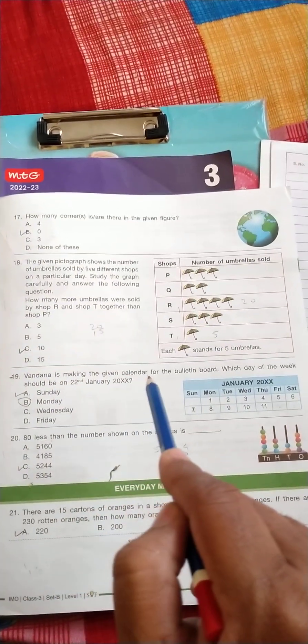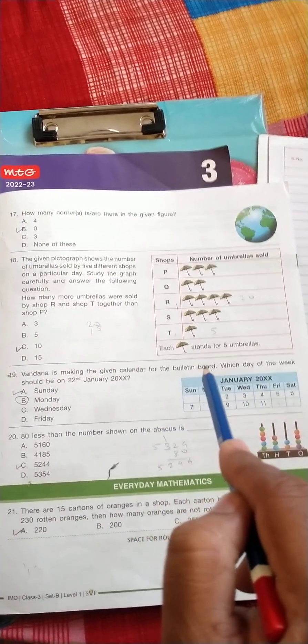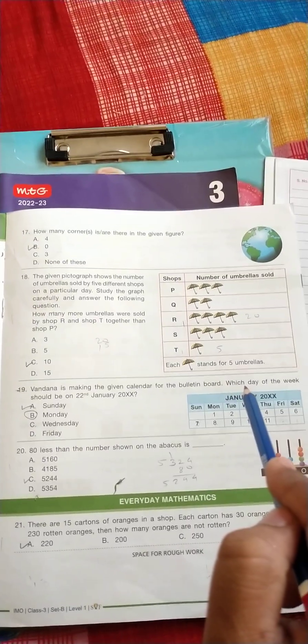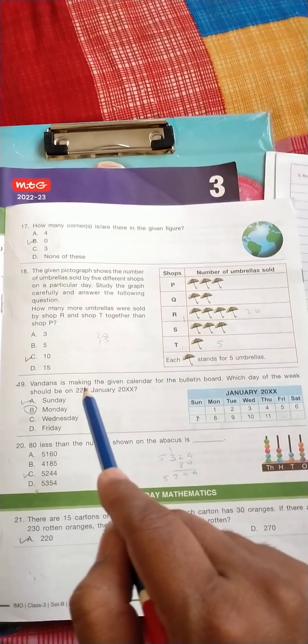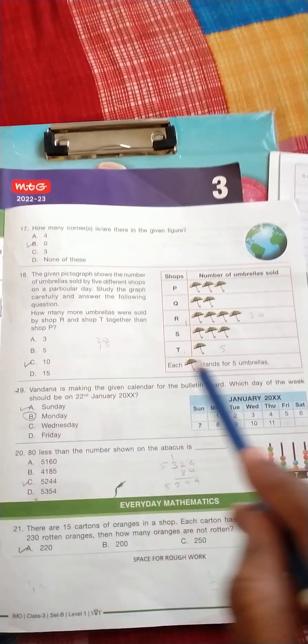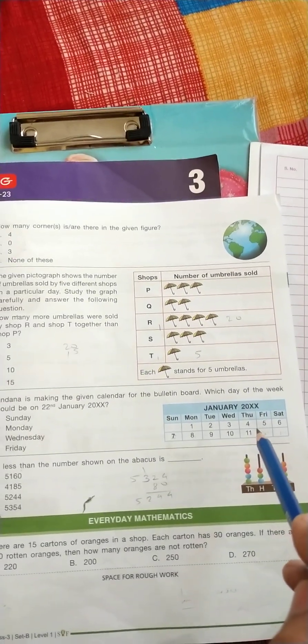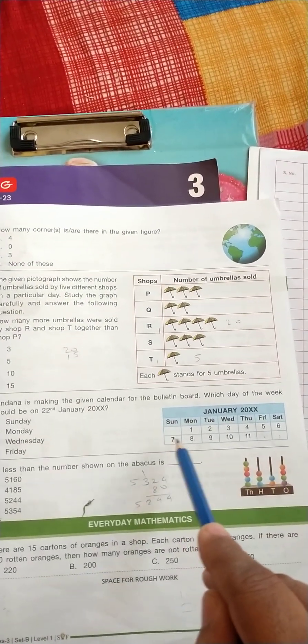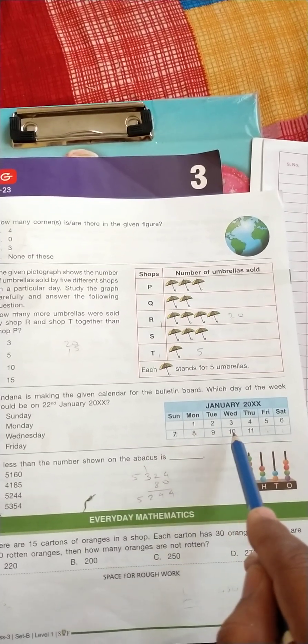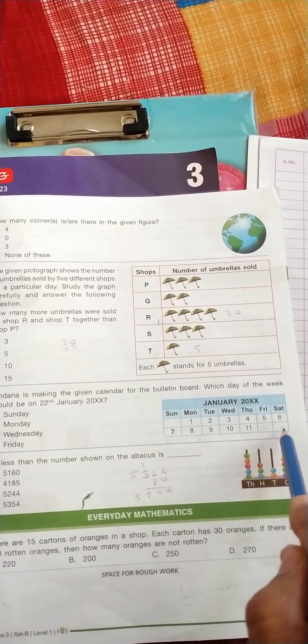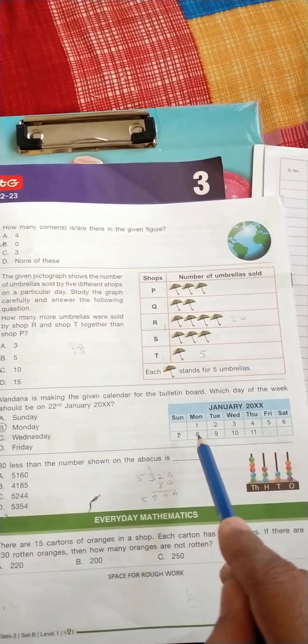Vandana is making the given calendar for the bulletin board. Which day of the week should be on 22nd January? So just count from here 12, 13, 14, 15, 16, 17, 18, 19, 20, 21, 22, Monday. The correct answer is B, Monday.